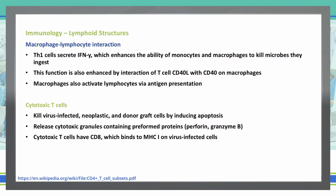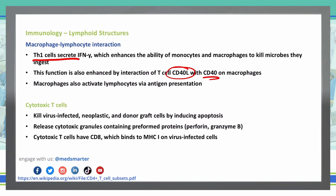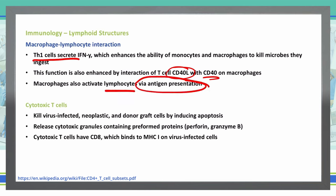T-helper 1 cells secrete interferon gamma, which enhances the ability of monocytes and macrophages to kill microbes that they ingest. This is enhanced by CD40L along with CD40 on the macrophages. Macrophages also activate lymphocytes through antigen presentation.